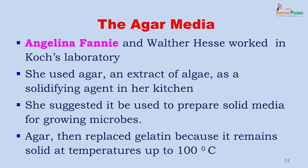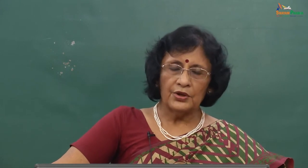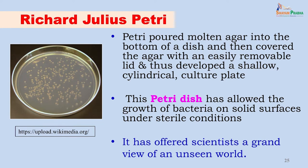Further progress in studying microorganisms had to await other developments. Angelina Fanny and Walter Hess worked in Robert Koch's laboratory. Angelina Fanny used an extract of an algae as a solidifying agent in her kitchen and suggested it be used to prepare solid media for growing microbes. Gelatin, previously used, liquefied at 100 degrees centigrade, preventing pure colony growth. Once agar was introduced, organisms could grow on the surface of solid medium and be studied better. Richard Julius Petri, an army physician, created the Petri dish — a glass dish in which agar was poured with a loose-fitting lid — allowing organisms to be grown in sterile pure culture. This dish is still referred to as a Petri dish and is used in microbiology laboratories worldwide.